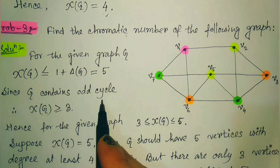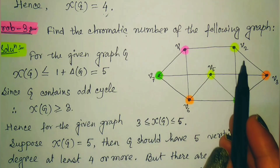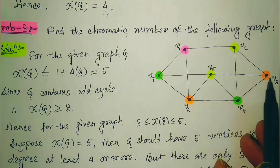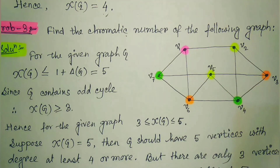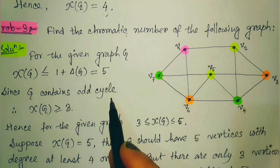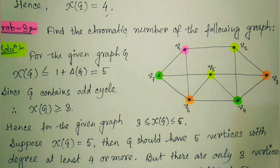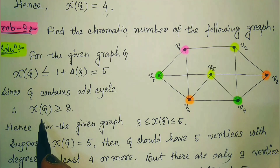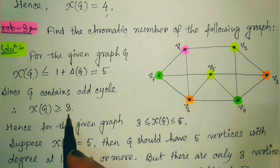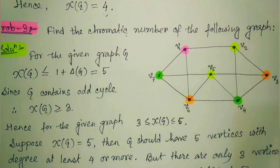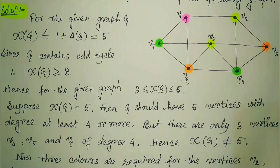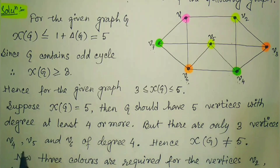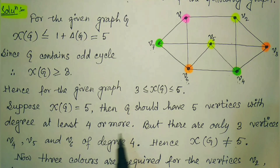Since the graph contains an odd cycle — for example, the triangle v2, v3, v4 — any graph with an odd cycle requires at least three colors. So the chromatic number is greater than or equal to 3, meaning it lies between 3 and 5. Suppose the chromatic number is 5; then the graph should have 5 vertices with degree at least 4.